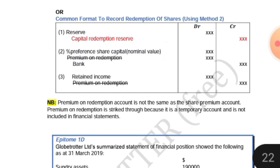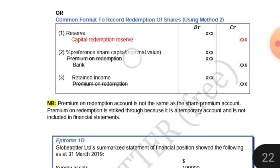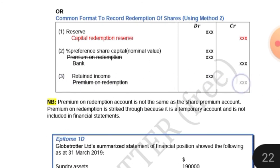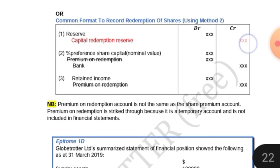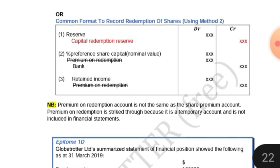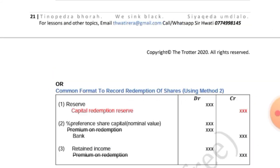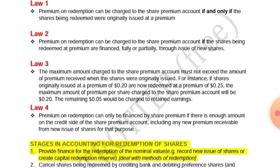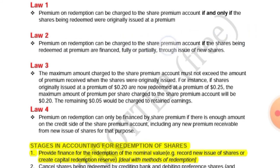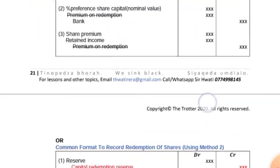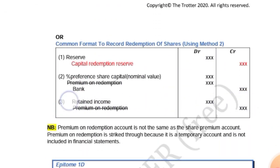On stage two for method two, we cancel the shares being redeemed by debiting them, also debiting the premium on redemption, and crediting the bank. Then we provide finance for the premium on redemption. Take note: as long as we use internal resources on stage one, we are automatically going to use retained income or revenue reserves — such as the general reserve — to finance the premium on redemption. We are not going to use the share premium account if method two only was used, because of this law: premium on redemption can be charged to the share premium account only if the shares being redeemed at a premium are financed fully or partially through issue of new shares.